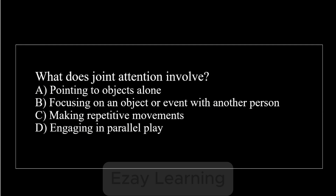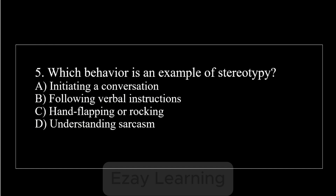Question 4: What does joint attention involve? The answer is: focusing on an object or event with another person. Question 5: Which behavior is an example of stereotypy? The answer is: hand flapping or rocking.